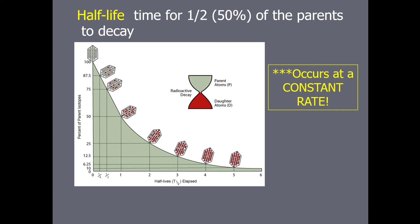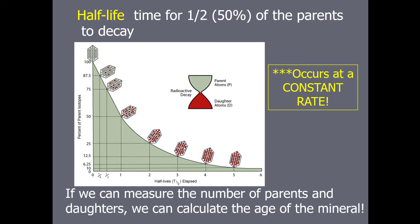Every different isotope has its own half-life, and importantly, this decay occurs at a constant rate. Because of that, if we can count all the parent atoms and all the daughter atoms, we can use this like a giant clock — rewinding it to when all the daughters used to be parent isotopes. If we know the rate that parents turn into daughters, we can calculate the age of the mineral.